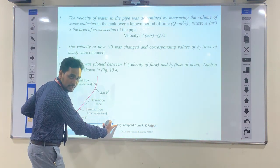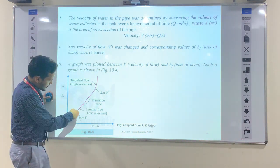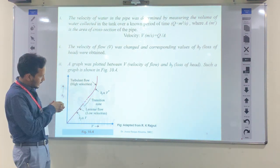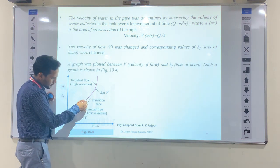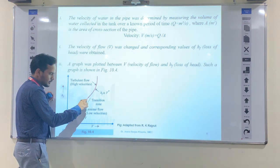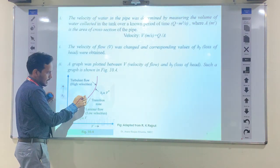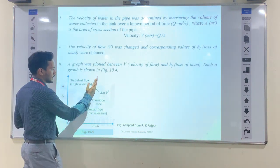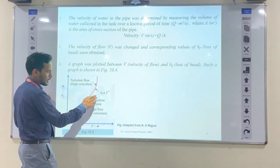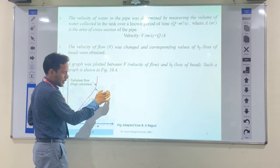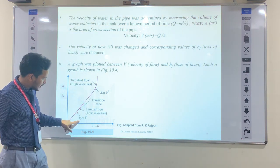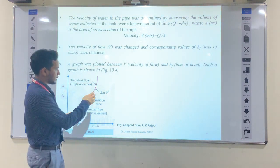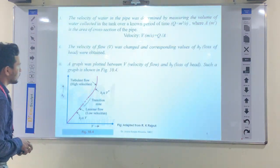From that experiment, a graphical representation shows hf on the y-axis and velocity on the x-axis. A linear curve represents the laminar flow region. Between laminar and turbulent flow there is a dashed line indicating the transition zone. At higher velocities the flow is nonlinear — this is due to turbulent flow — giving a power law graph, showing direct proportionality to V for laminar and nonlinear variation for turbulent.